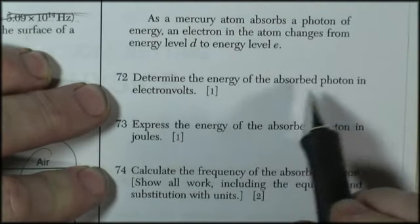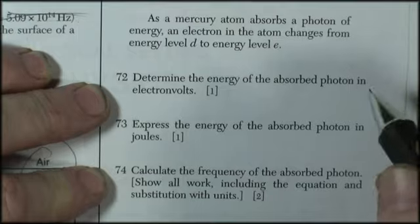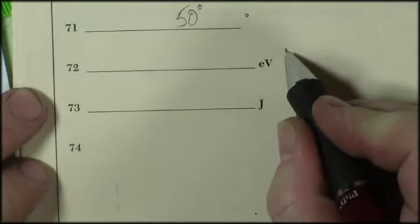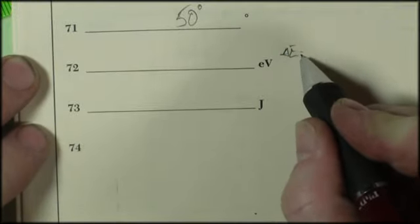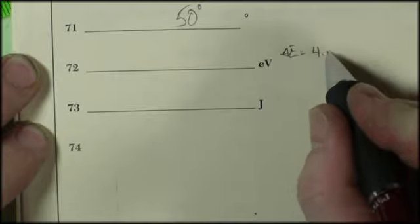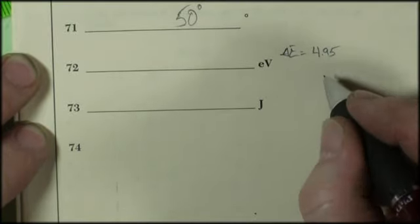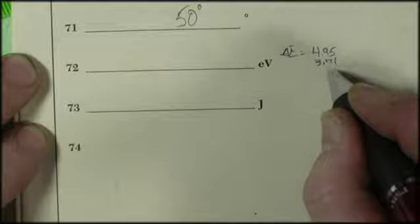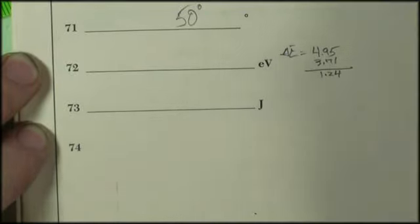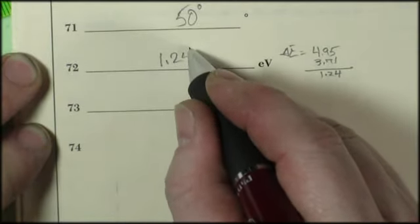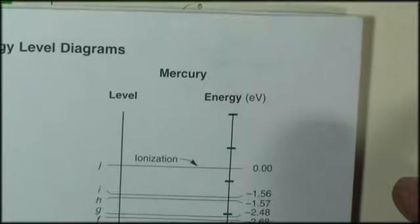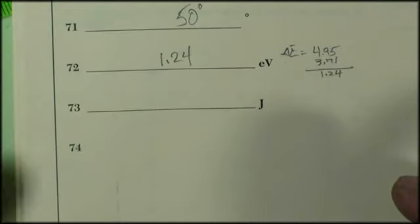Question 72. Determine the energy of the absorbed photon in electron volts. Well, the energy is going to be the change in energy level. And so I'm going from, what did we say, 4.95 to 3.71. And so 4.95 minus 3.71, 1.24 EVs. And EV is the units on the chart. So we don't have to do any converting there.